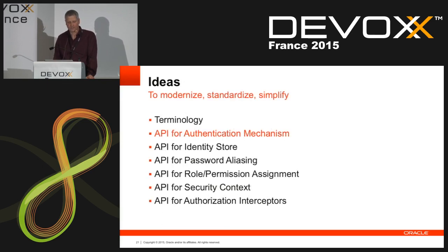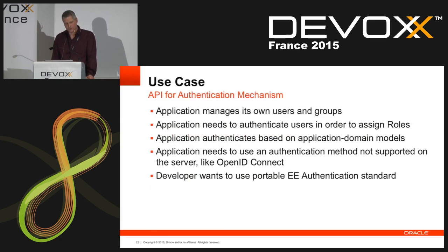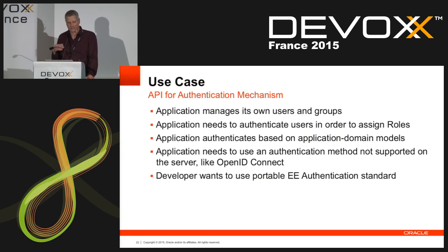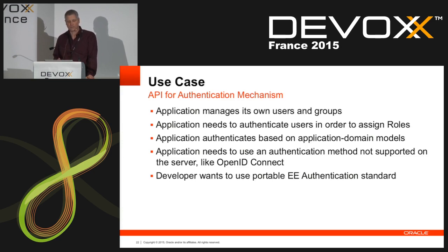Next I'm going to talk about the API for authentication mechanism and how we want to simplify it. The use case is for applications that manage their own users and groups, and need to authenticate users in order to assign roles. Applications would authenticate based on some application domain model that the server wouldn't know anything about. Perhaps an application wants to use some authentication method not even supported by the server, or developers simply want a portable authentication mechanism standard that you can move from platform to platform without tweaking around scripting or UI per platform.